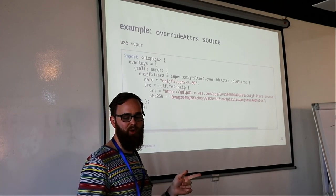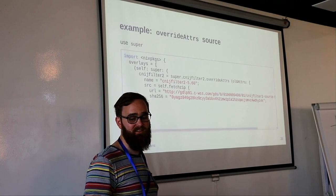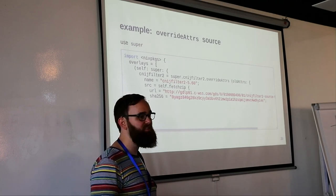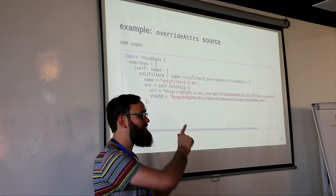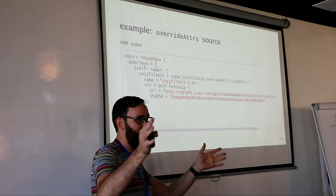Right now, Florian Klink is talking about using post-build hooks to get automatic caching of untrusted builds, which sounds really cool — so if you want to go see that, you should.